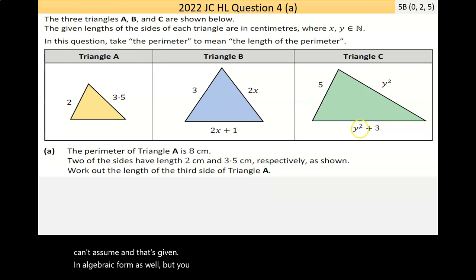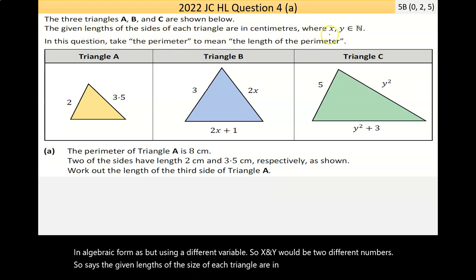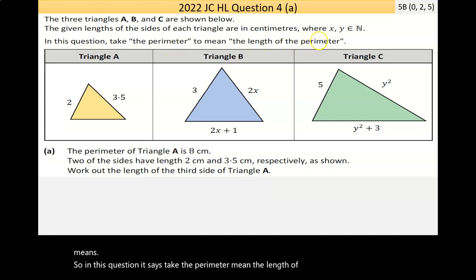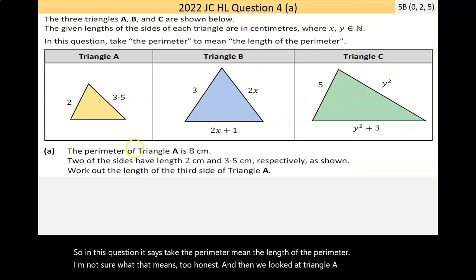So X and Y would be two different numbers. So it says the given lengths of the sides of each triangle are in centimeters, where X and Y are natural numbers. So that just means X and Y are positive whole numbers. In this question, it says take the perimeter to mean the length of the perimeter.